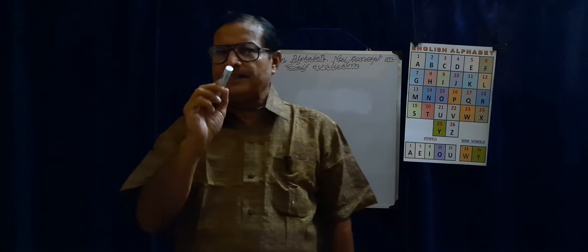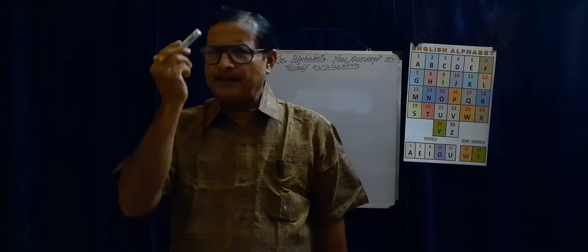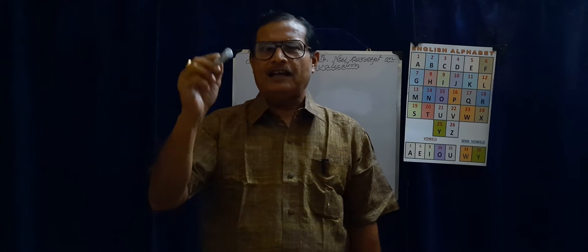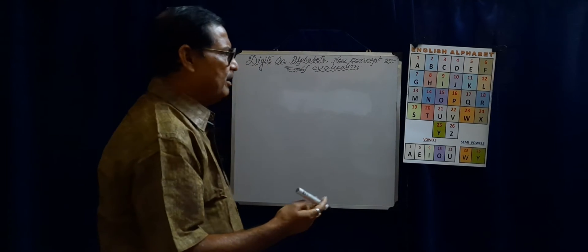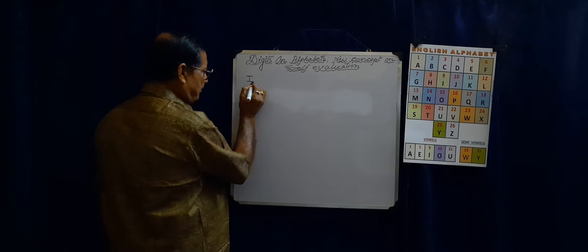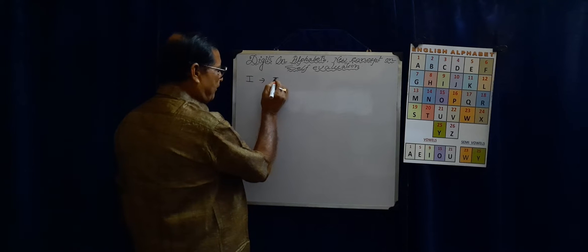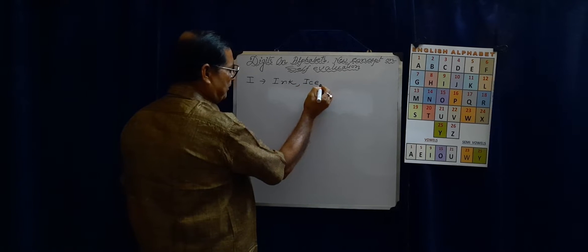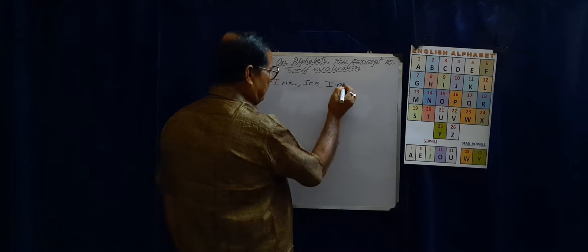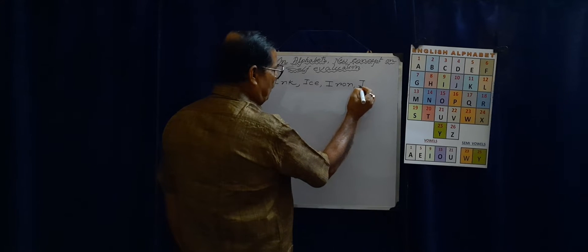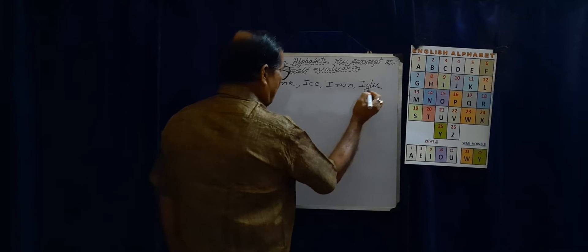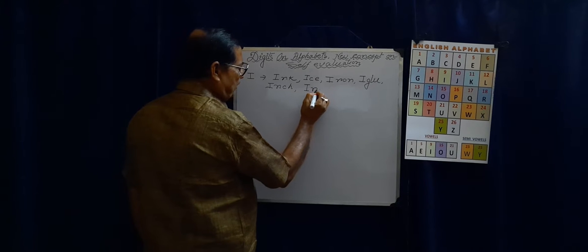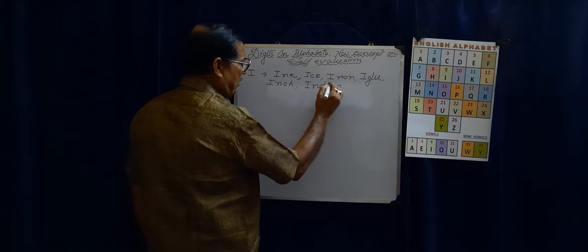Today I shall discuss multiplication. And I remember I asked you to write words with I. I hope my loving children have written them. What I feel they might have written: I for ink, I for ice, I for iron, I for indigo, and so on.